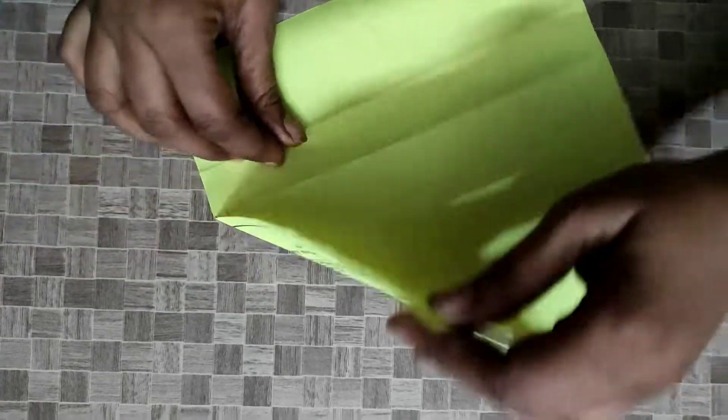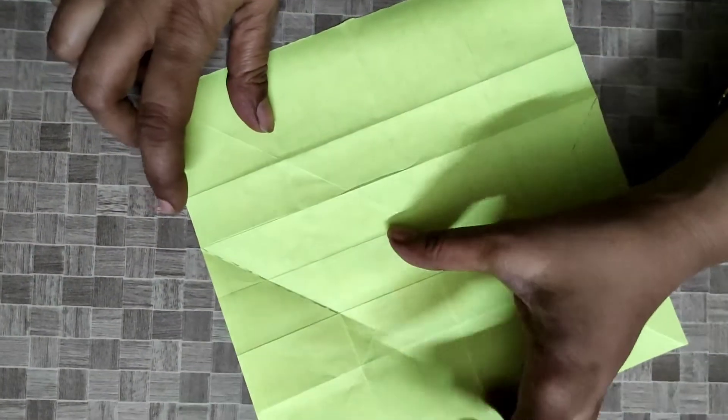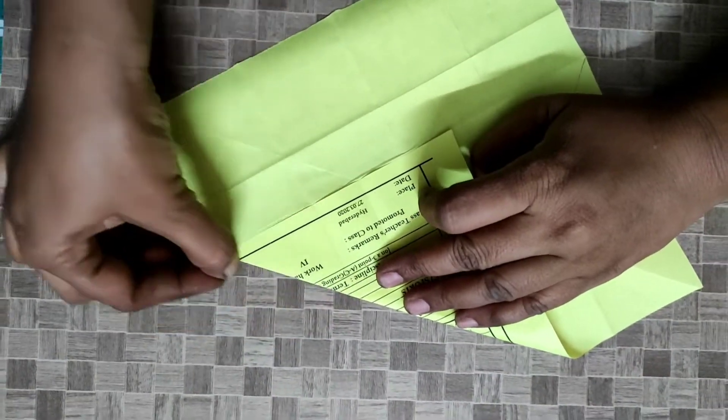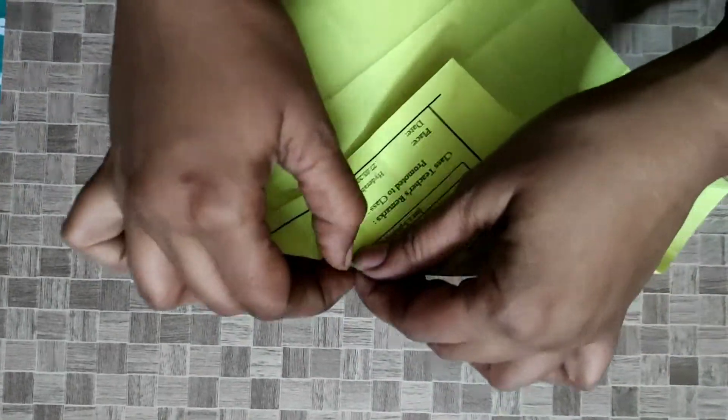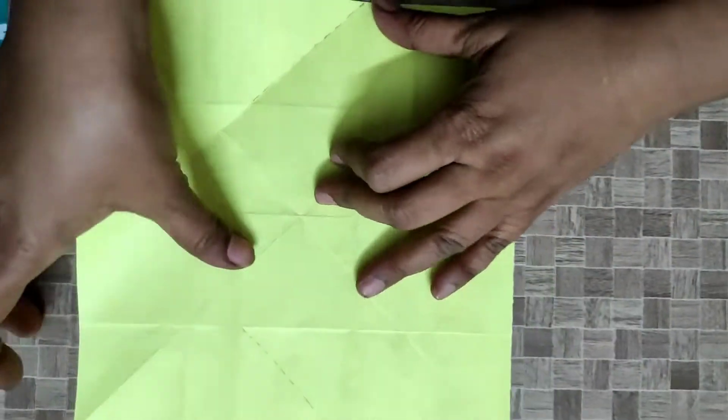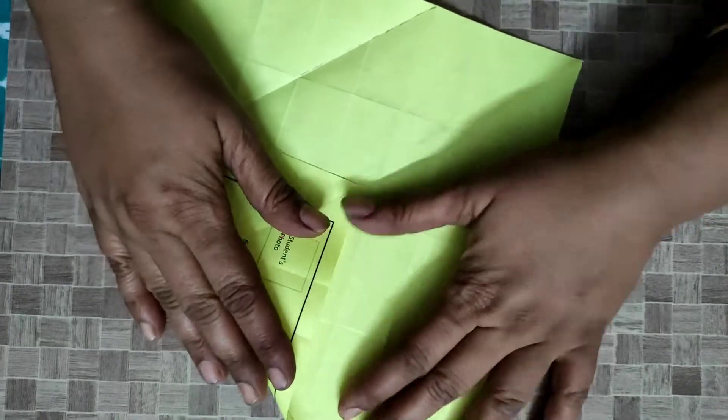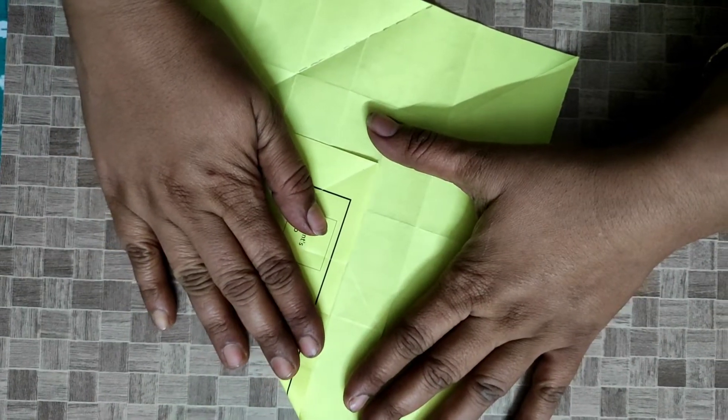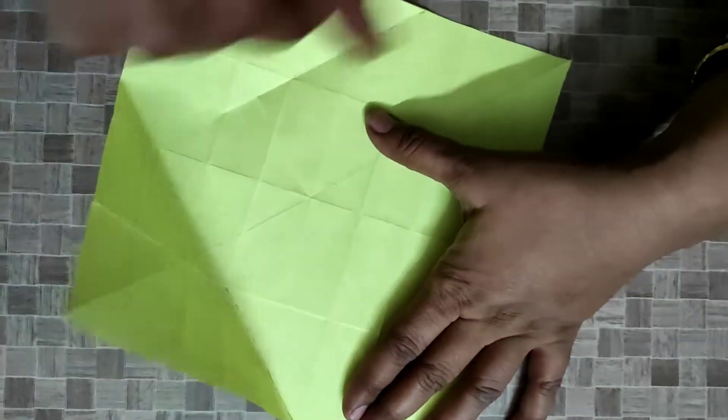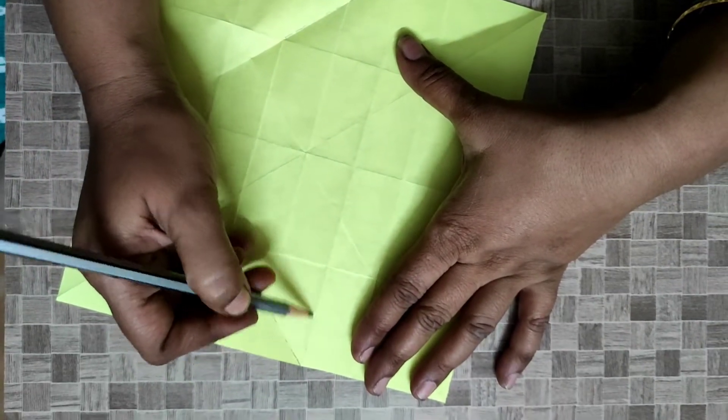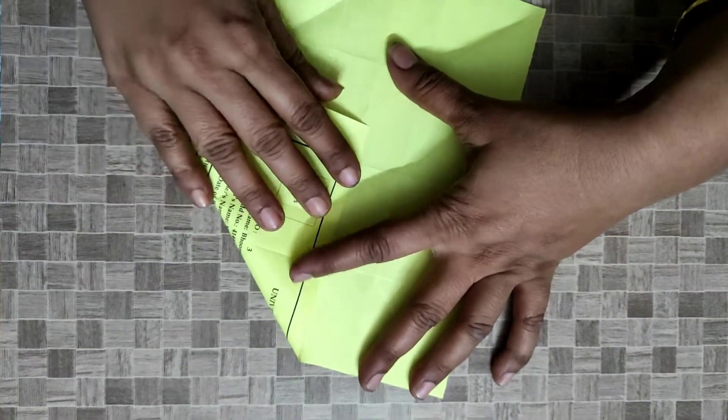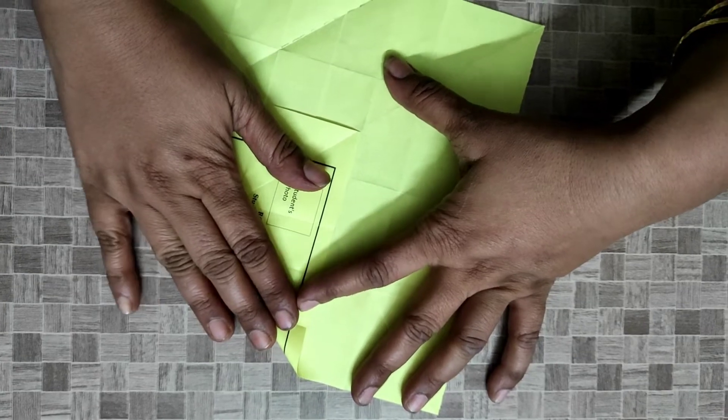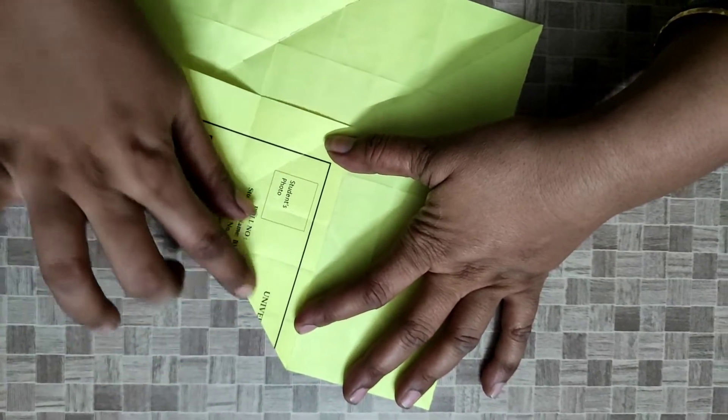Here to here, this small part we have to fold. Like this side also you have to fold. You can see this line up to here. This line you can fold the paper so that you will get the correct folding.